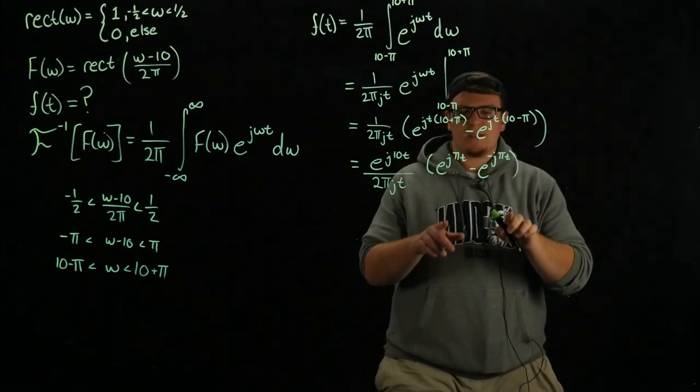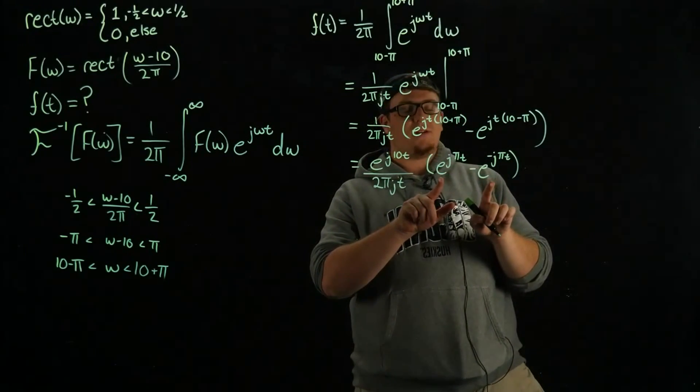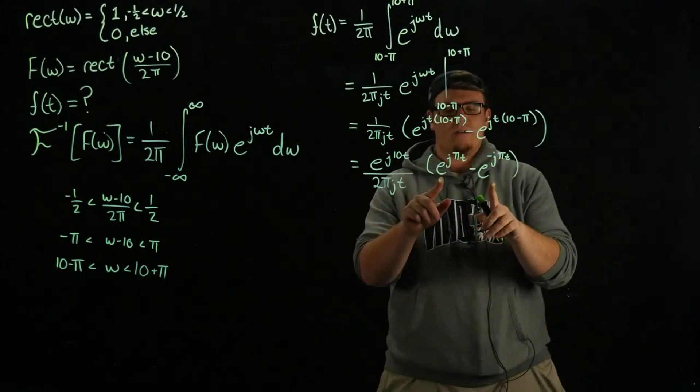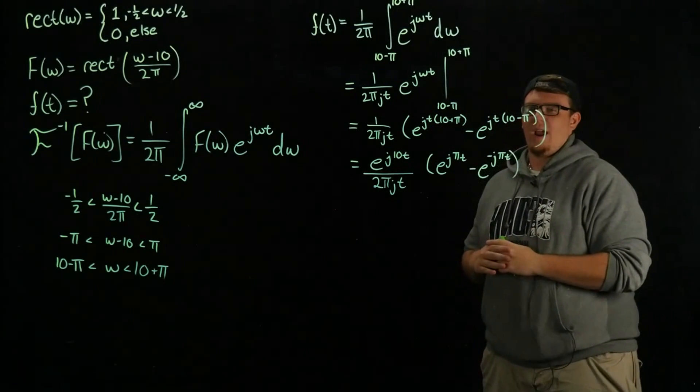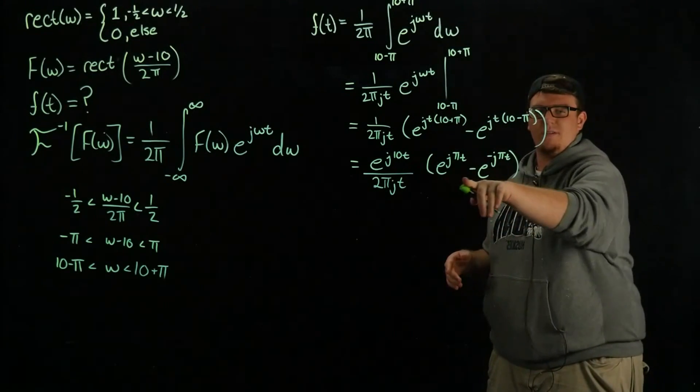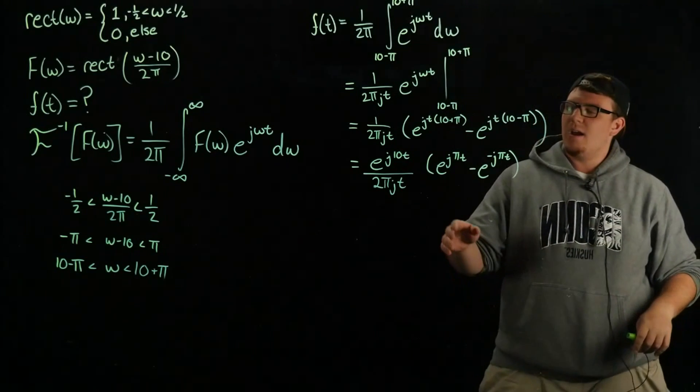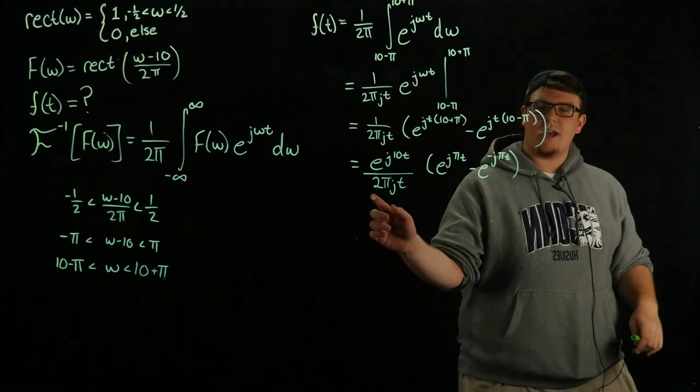These two exponentials here should look very familiar. This is the general definition for a sine function if you were to divide by 2 j here. Luckily we have a 2 j over here.